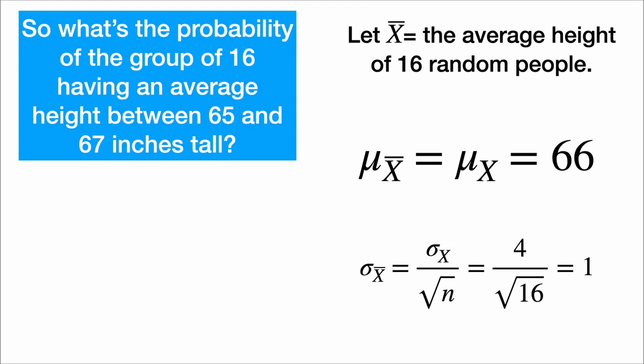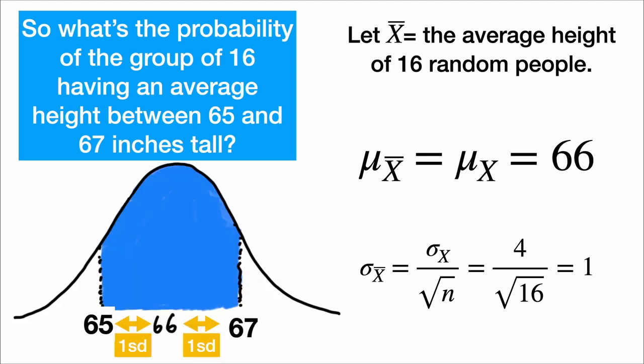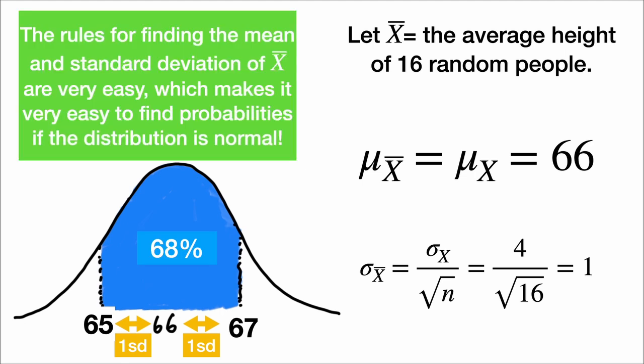So what's the probability of the group of 16 having an average height between 65 and 67 inches tall? Well, each of those numbers is one standard deviation away from the mean, so that probability is 68%. The rules for finding the mean and standard deviation of x̄ are very easy, which makes it very easy to find probabilities if the distribution is normal.